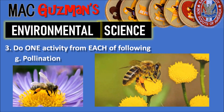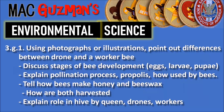For Pollination, this is actually a pretty big one and it's all about bees. I chose 3G number 1. Using photographs or illustrations, point out differences between a drone and a worker bee, discuss stages of bee development like eggs, larva, and pupa, explain the pollination process and propolis and how it's used by bees, tell how bees make honey and beeswax and how both are harvested, and explain the role of the queen bee, drone bees, and worker bees in the hive.